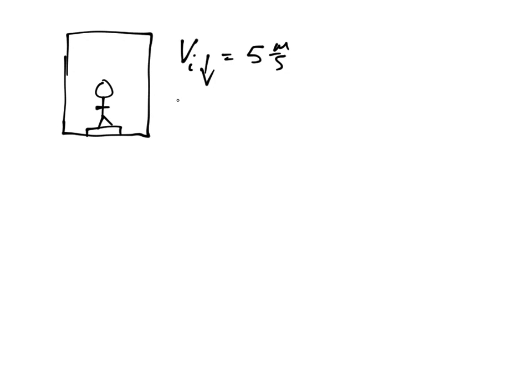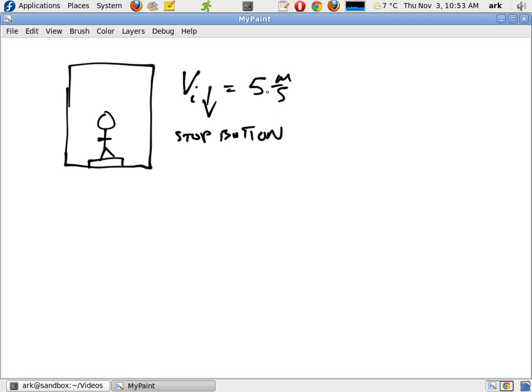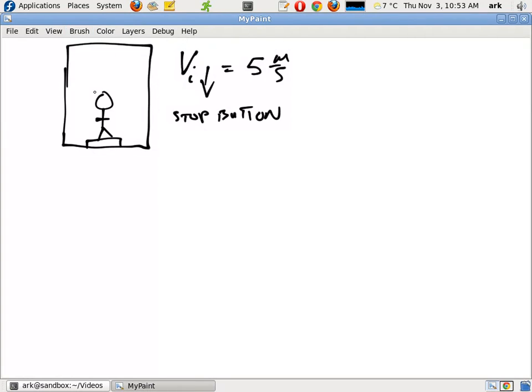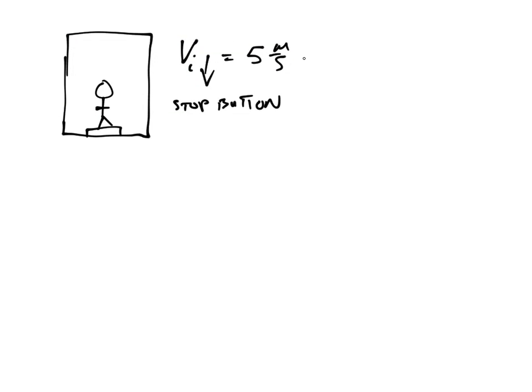Now there is an emergency stop button and the person inside hits this emergency stop button. Let's change something just for a second here. This is a little bit too big. Okay, and the elevator comes to a stop. So the final velocity of the elevator is zero and the elevator comes to stop in a time of one second.